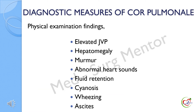Next are the diagnostic measures of cor pulmonale. Common physical examination findings are elevated jugular venous pressure, hepatomegaly, murmurs, abnormal heart sounds, fluid retention, cyanosis, wheezing, and ascites.